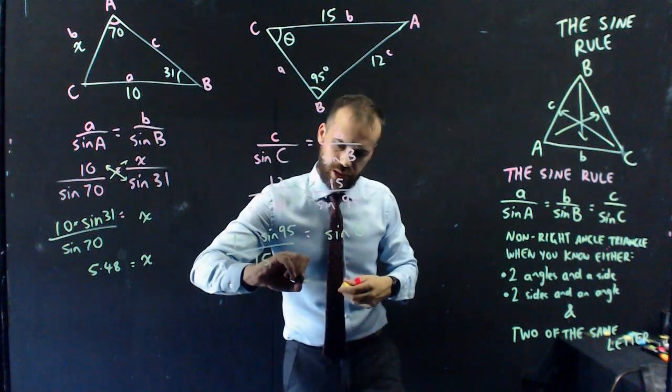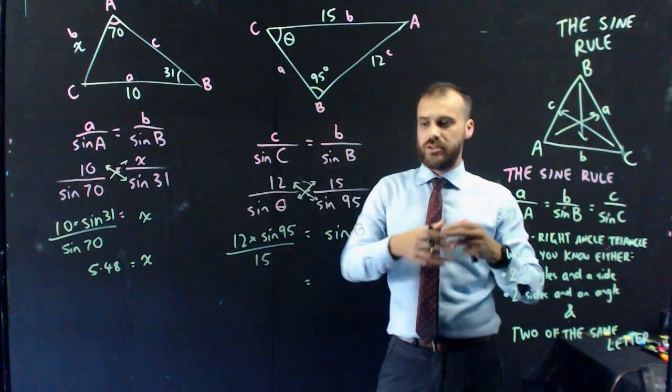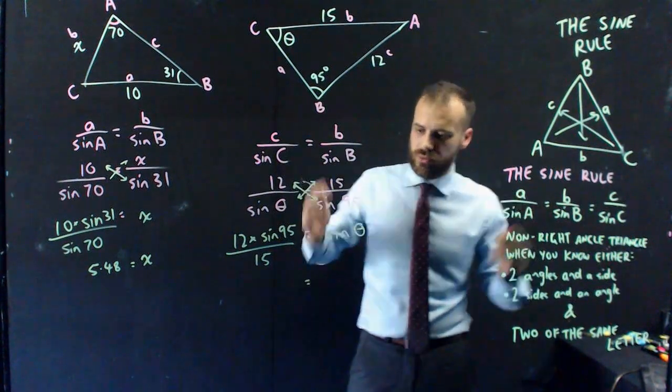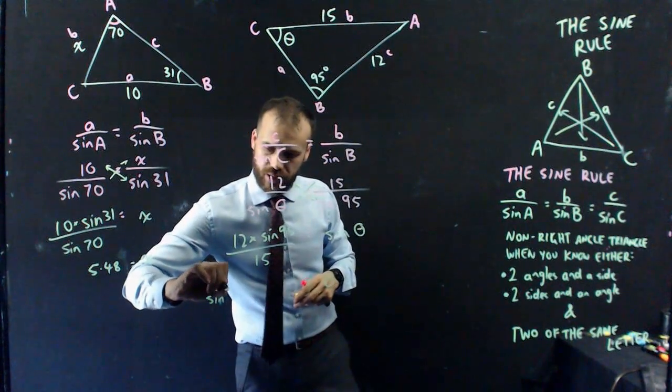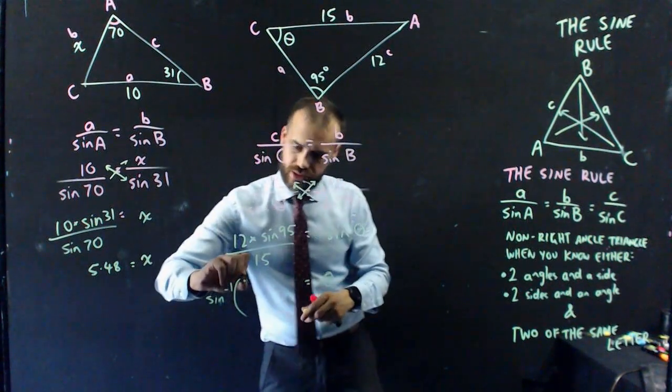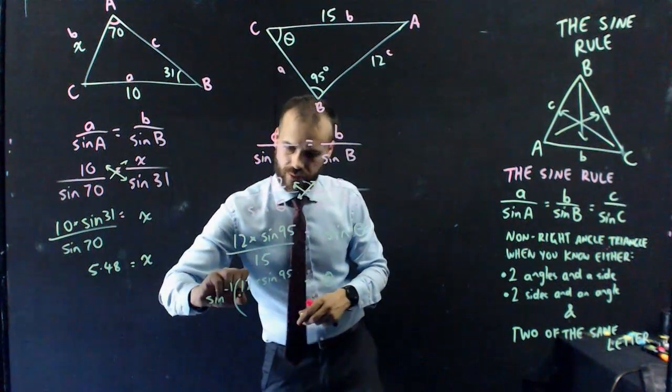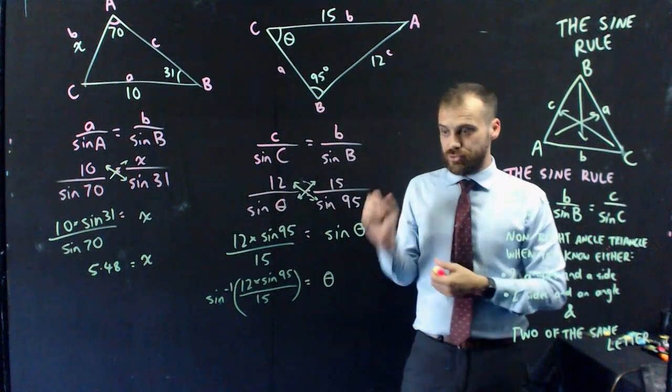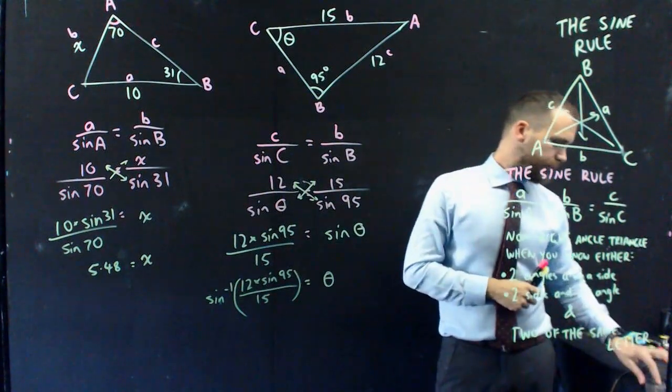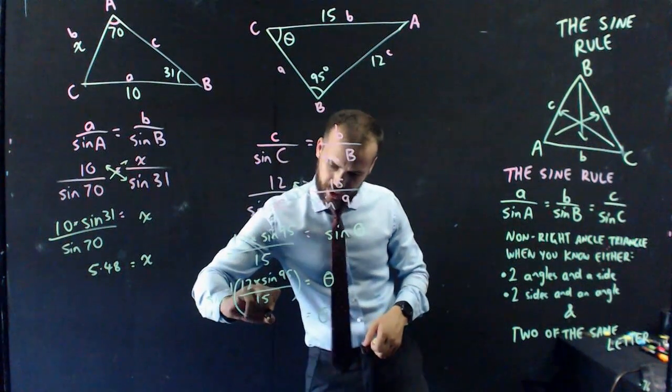I've got to take one more step here, which is to use inverse sine, or shift sine, or sine to the negative one, whatever you want to call it. Sine negative one, and then all of this stuff. Make sure your calculator is in degrees. Just shove it in there. That's going to give me theta equal to 52.84.